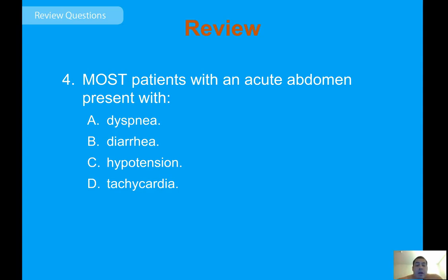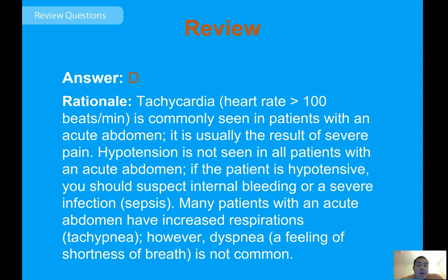Review question: most patients with acute abdominal pain present with what? The answer is D — tachycardia, a heart rate over 100, is commonly seen and is usually a result of severe pain. Hypotension is not seen in all patients; if present, suspect internal bleeding, severe infection, or sepsis. Many patients may have increased respirations, but dyspnea — a feeling of shortness of breath — is not common.